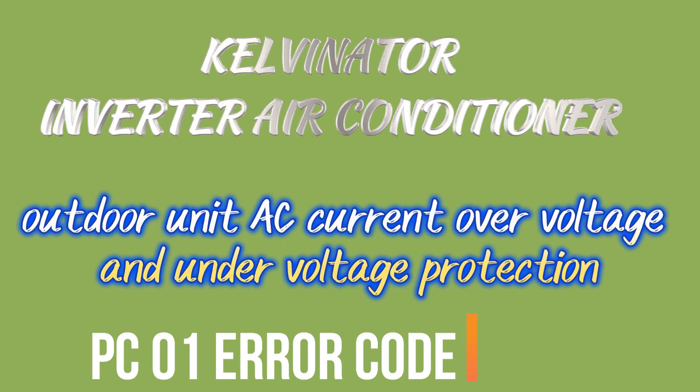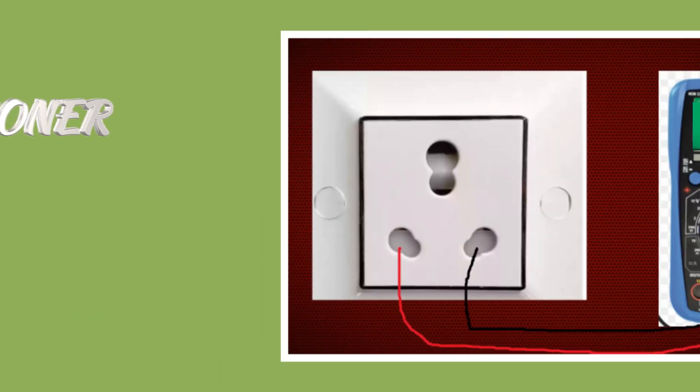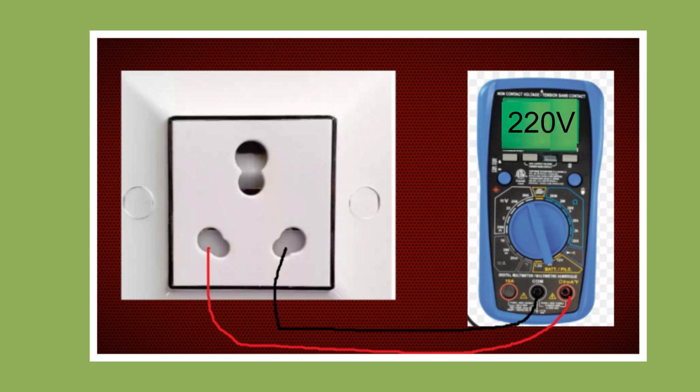This problem can occur due to two reasons. The first reason: check the input voltage of your house. The voltage should be between 220 volts to 240 volts — this is the normal range. If the voltage is more or less than 220 to 240 volts, you should get the power supply of the house checked and get the voltage corrected. This will fix the error.